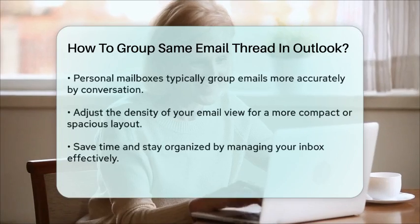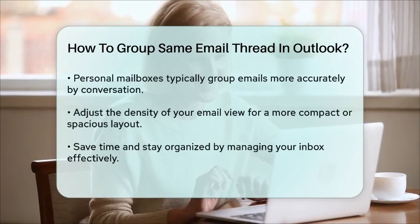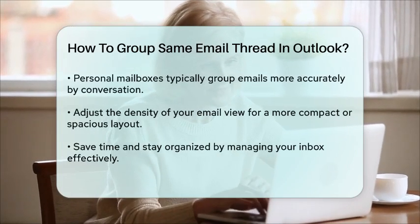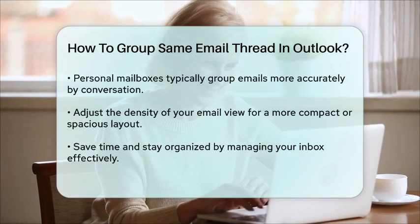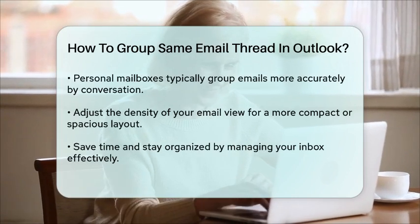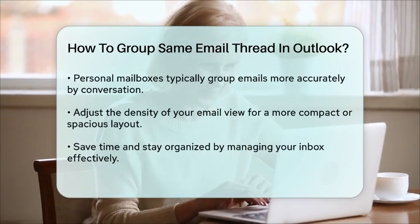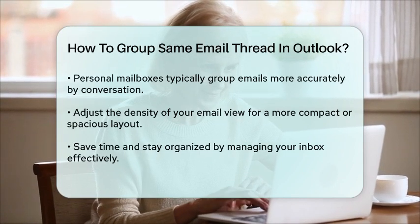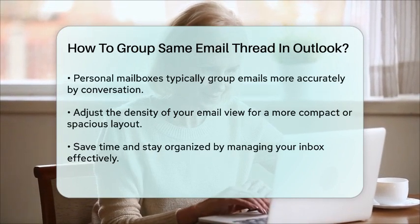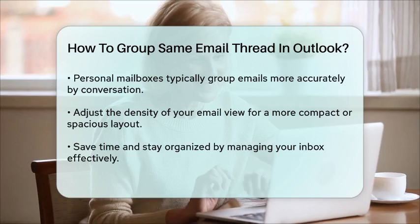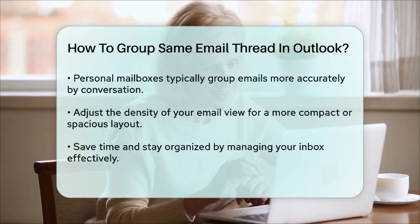Additionally, you can adjust the density of your email view to make it more compact or roomy, depending on your preference. To do this, go back to the View tab and select the Density option that works best for you. This can help you see more emails on the screen at once or give you more space to read each email.